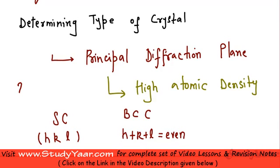For example, 2 1 1 is a principal diffraction plane for a BCC because 2 plus 1 plus 1 is equal to 4. So that is a principal diffraction plane, but 1 1 1 is not a principal diffraction plane because 1 plus 1 plus 1 is 3 which is not even.